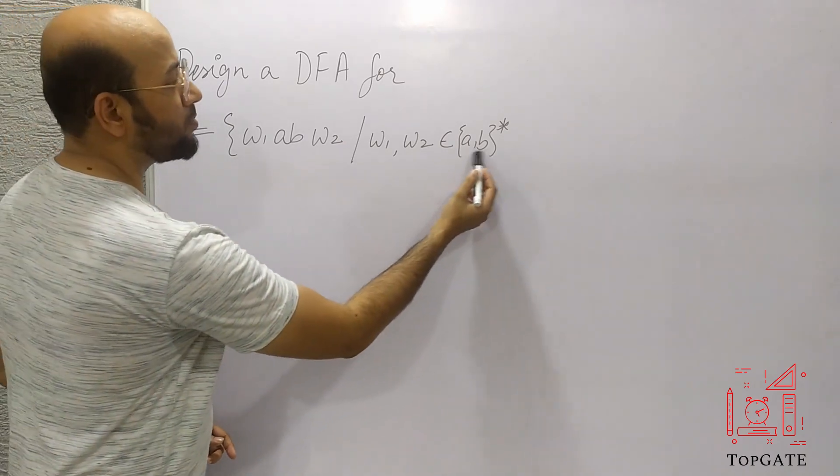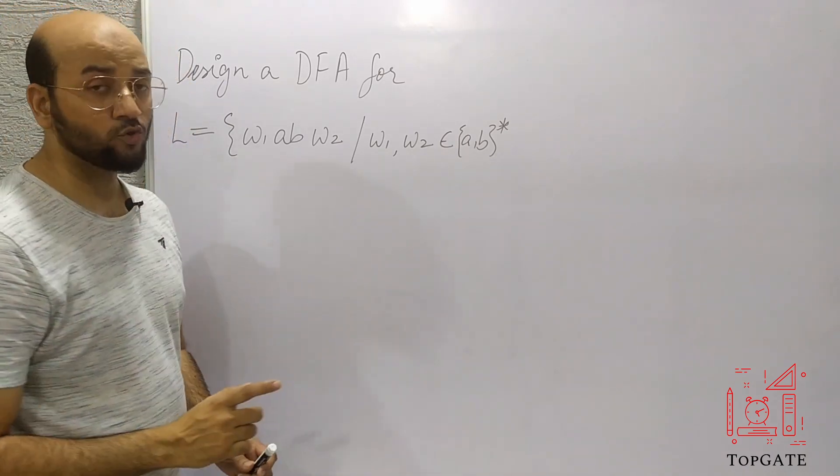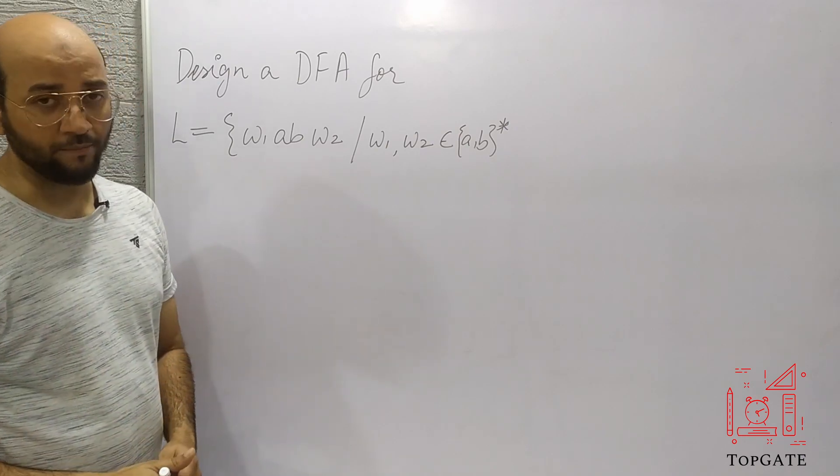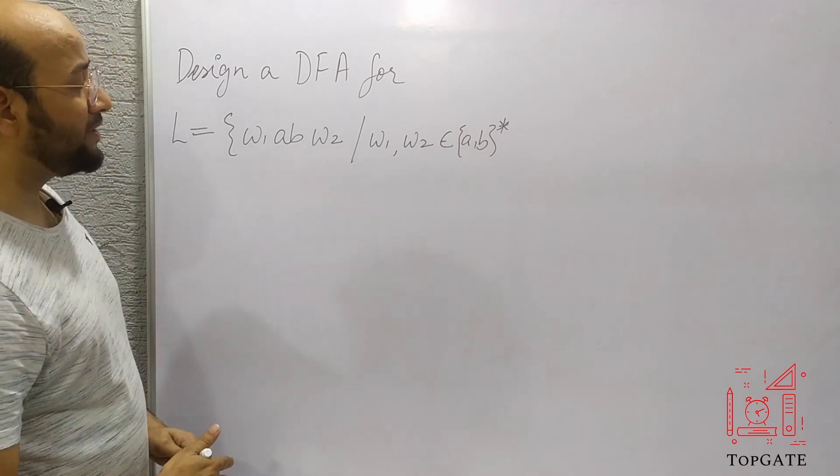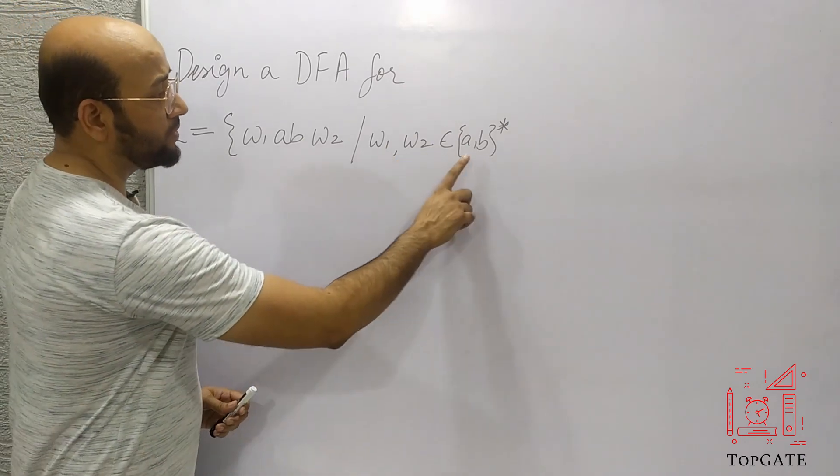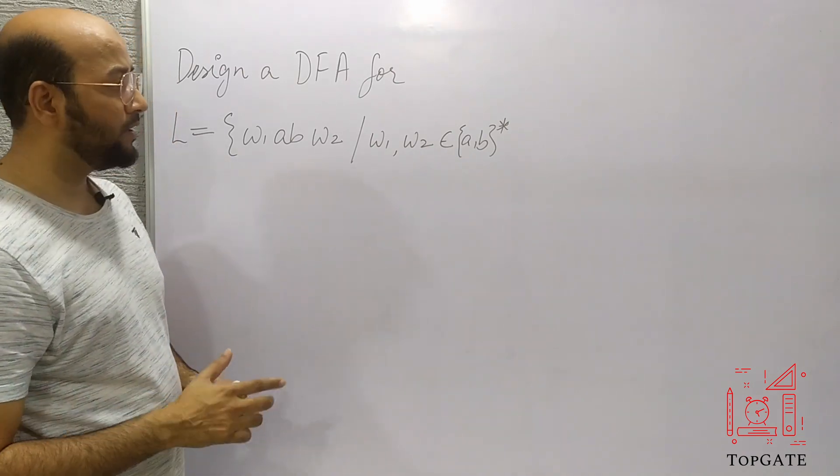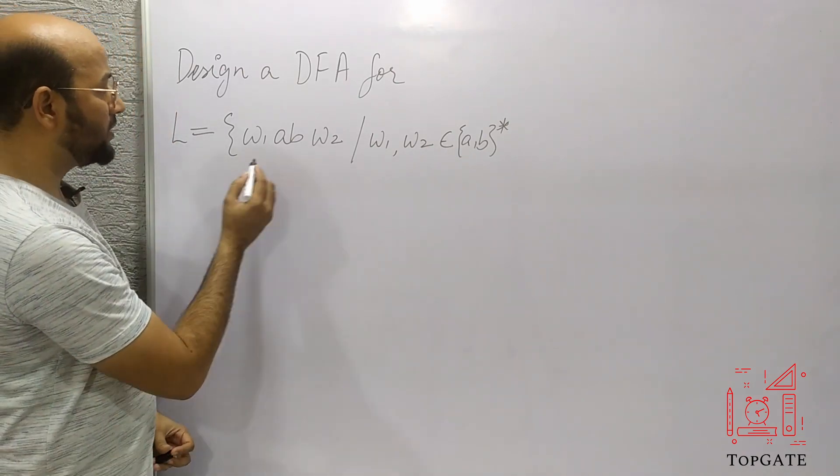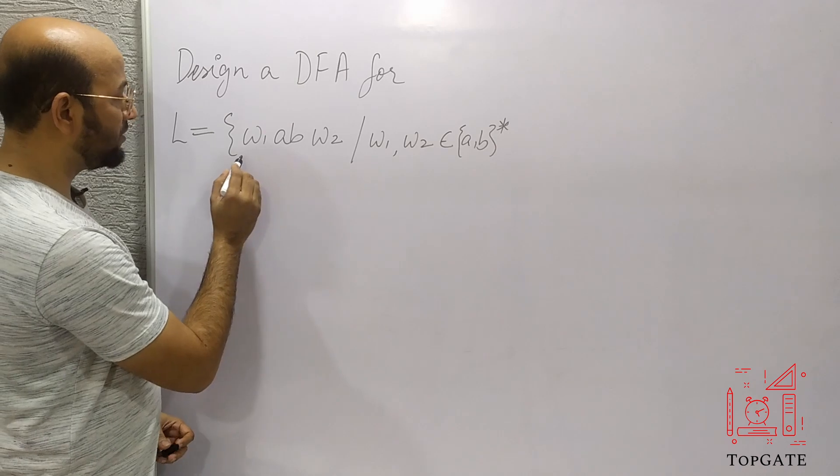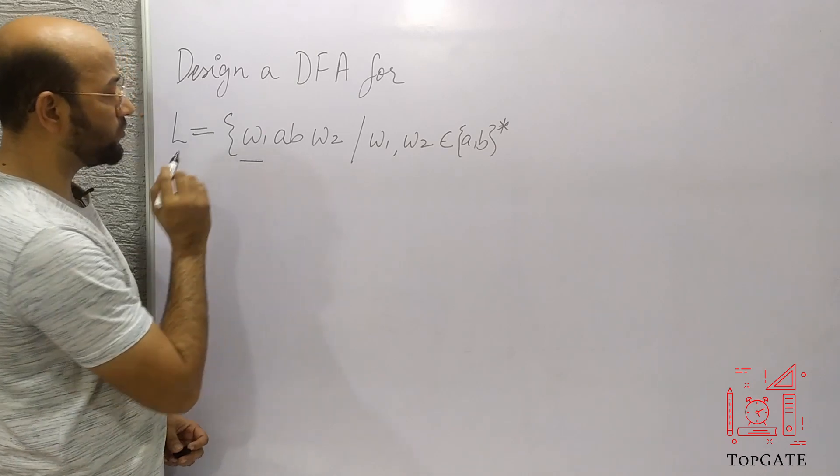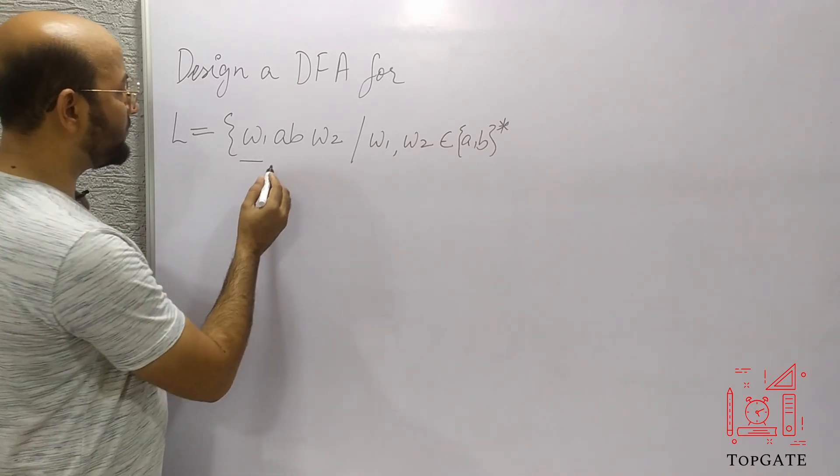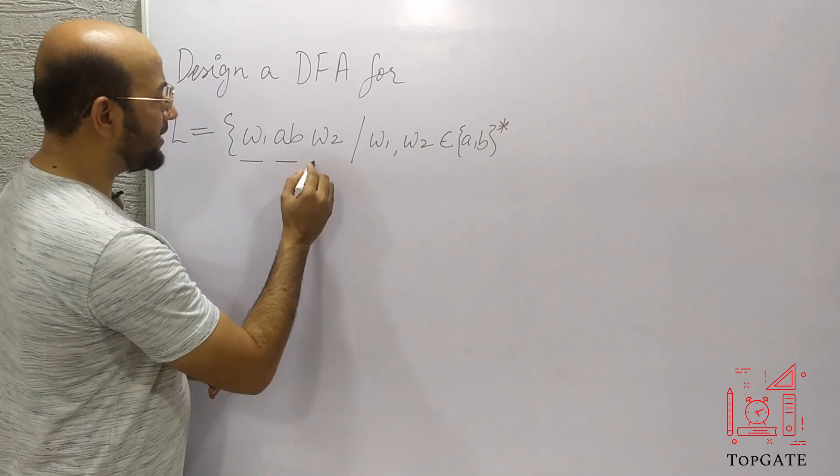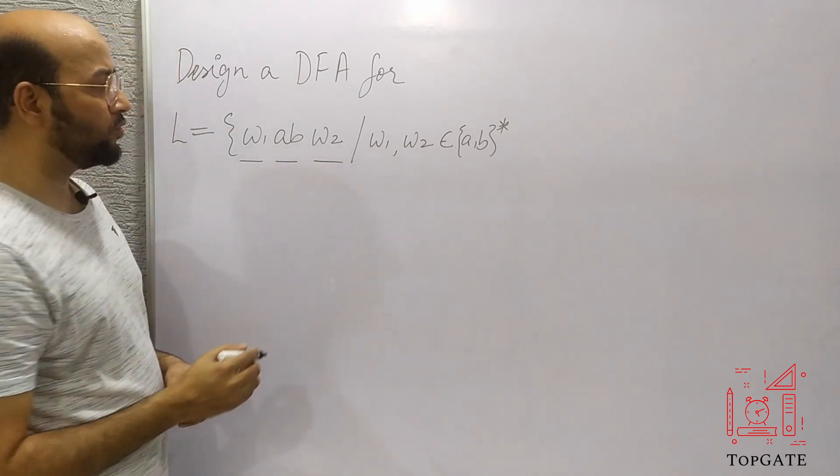Now what is this A, B star? This A, B star is called the Kleene closure of AB. The Kleene closure of AB means any combination of AB including null. So in this language, in the first part of the string, we can have any combination of AB including null, then followed by AB, and then again any combination of AB including null.